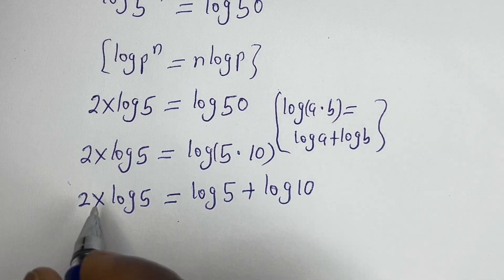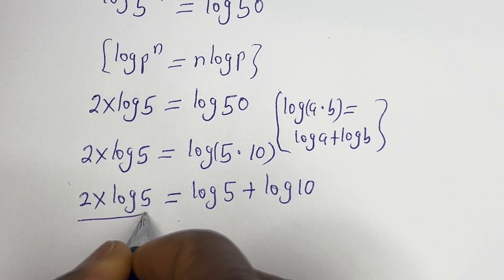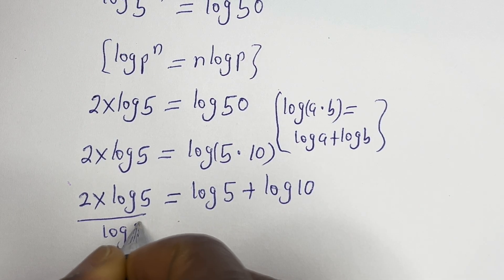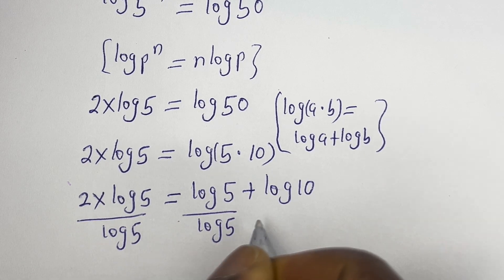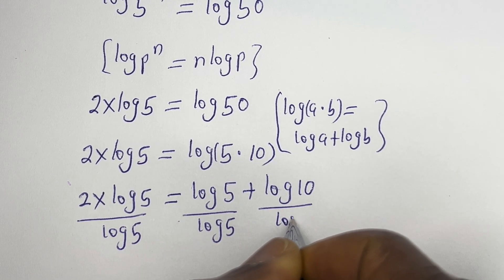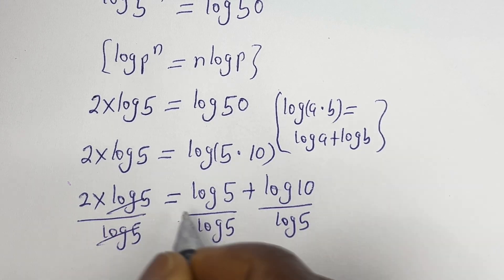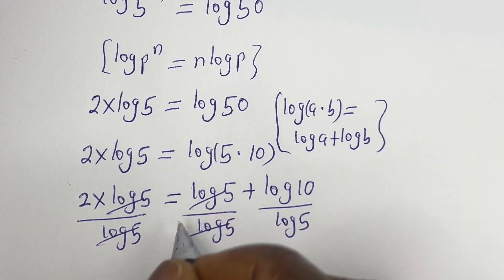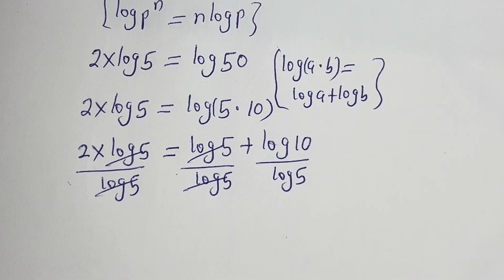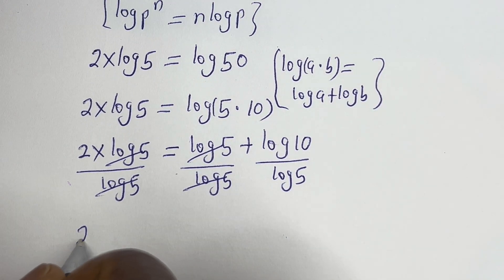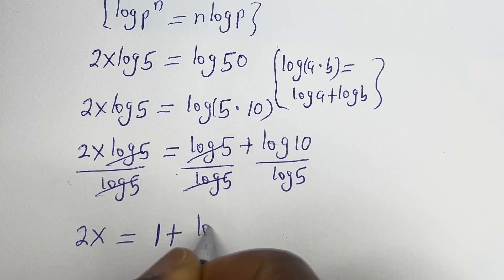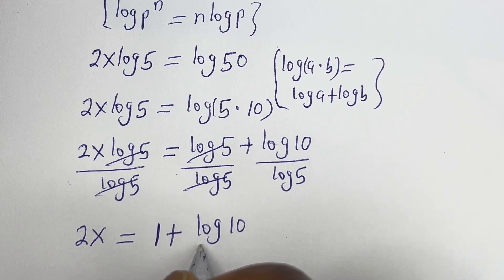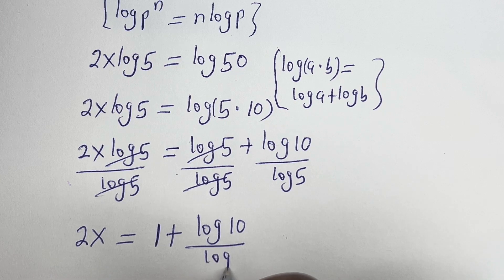Then this can be written as 2s log 5 is equal to log 5 plus log 10. Let's divide all through by log 5. This divided by log 5, this divided by log 5, and this divided by log 5 — these cancel. Then we have 2s is equal to 1 plus log 10 over log 5.